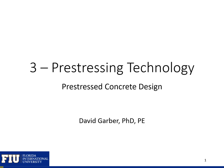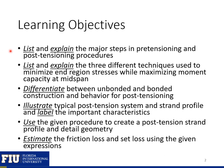This presentation is going to give you a general overview of pre-stressing technology. By the end of this presentation, I want you to be able to list and explain the major steps in pre-tensioning and post-tensioning procedures, list and explain the three different techniques used to minimize end-region stresses while maximizing moment capacity at mid-span, differentiate between unbonded and bonded construction and behavior for post-tensioning, illustrate typical post-tension system and strand profile and label the important characteristics, use the given procedure to create a post-tension strand profile and detail its geometry, and estimate the friction loss and set loss using the given expressions for post-tension structures.